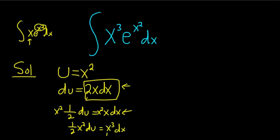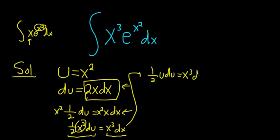So we've accomplished our goal. The only thing that remains to check is, is the left hand side solely in terms of u? It is not. However, u is equal to x squared. So we can replace x squared with u and so we have 1 half u du equals x cubed dx.